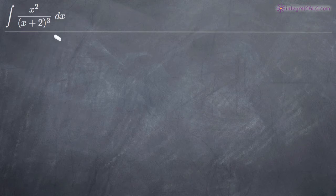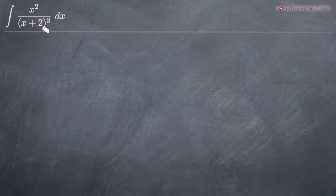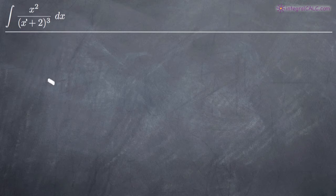The interesting thing about this problem is that we have linear repeated factors. When you're dealing with a partial fractions problem, the first thing you need to decide is whether or not you're dealing with linear factors or quadratic factors, and in either case, whether or not you're dealing with distinct factors or repeated factors. In our denominator, we don't have any x squared, x cubed, or x to the fourth terms — we just have an x to the first power. So that means we're dealing with a linear factor.